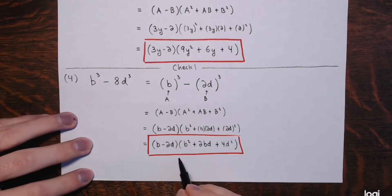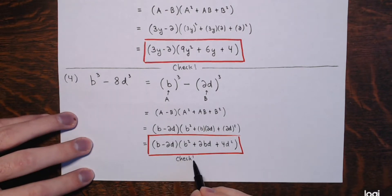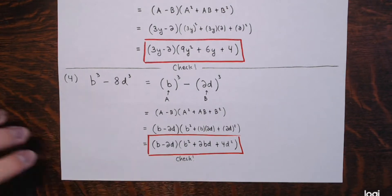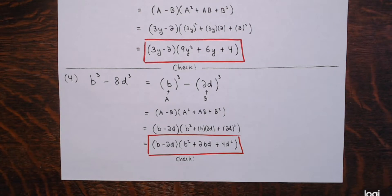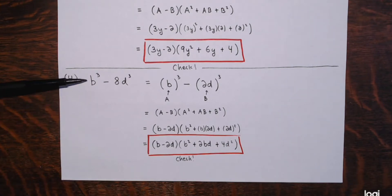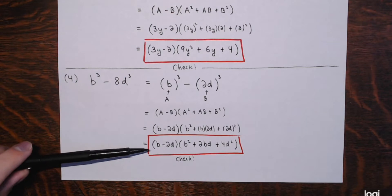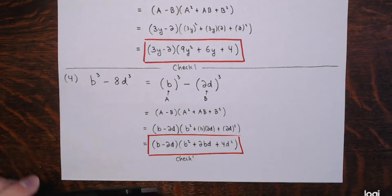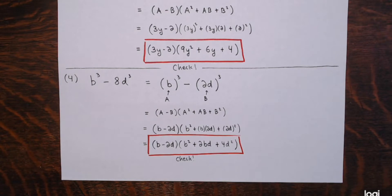Don't forget to check your work — multiply these together and combine like terms, and you should end up with b cubed minus 8d cubed. If you don't, then either you're multiplying wrong or you did something wrong earlier. And remember, if this expression truly equals the original, they should have the same value no matter what you plug in for b and d.